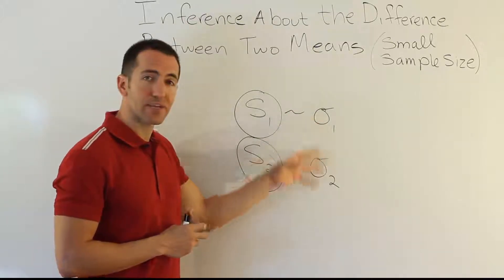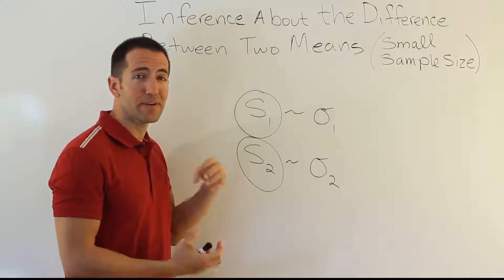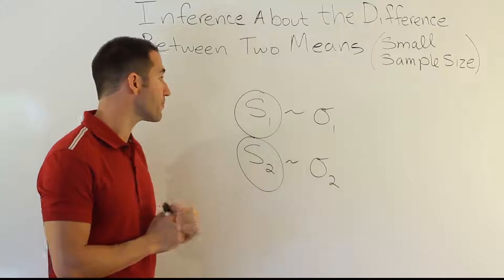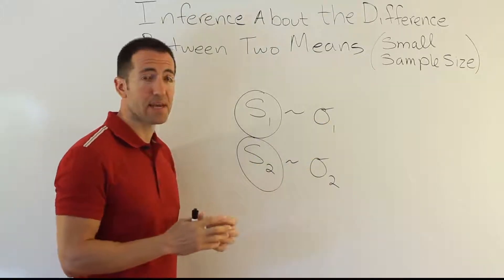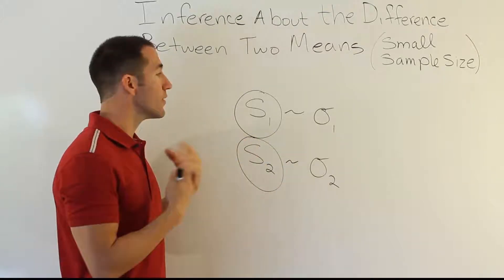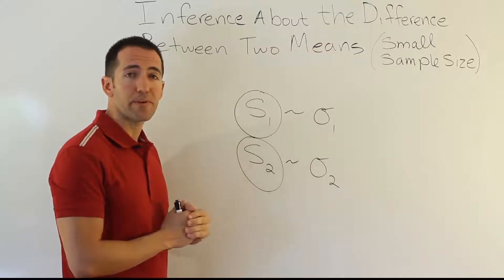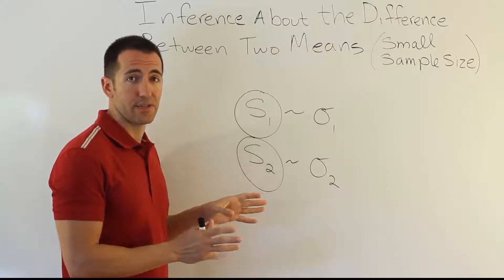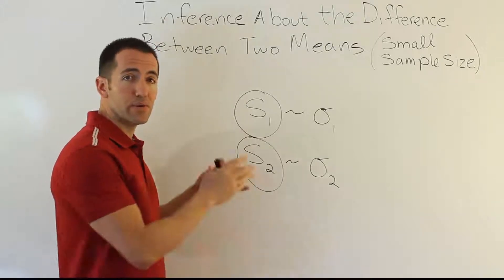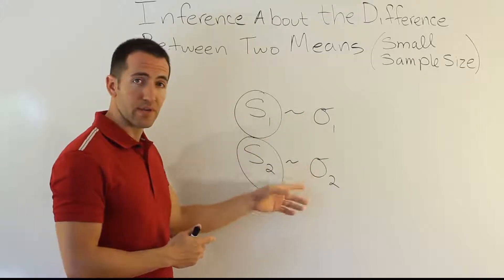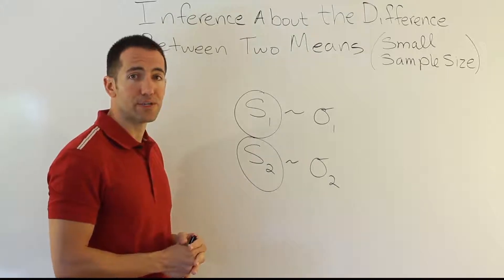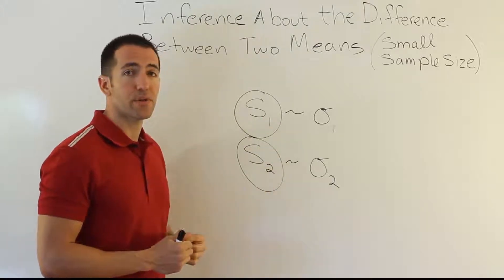If we assume that the population standard deviations from the two groups are different, then we have to use an approximation technique — we only have an approximate t-distribution in that situation. However, if the two items are exactly the same and equal variance or equal standard deviation is assumed, then the distribution of our point estimator is going to be exactly a t-distribution. So let's look at the easier scenario first, where they're assumed to be the same.